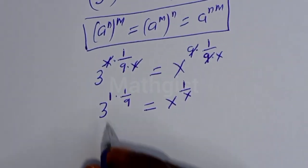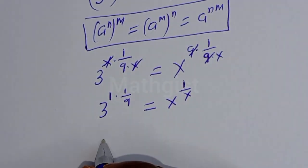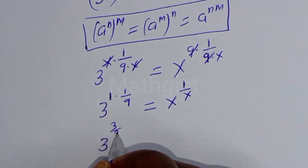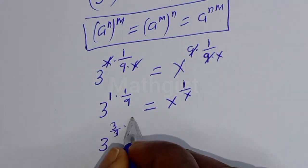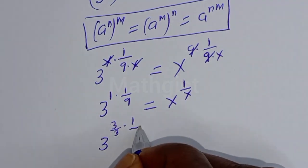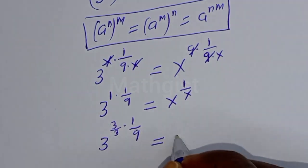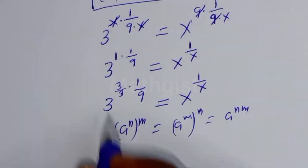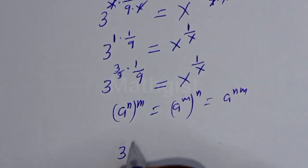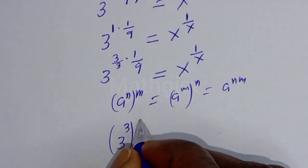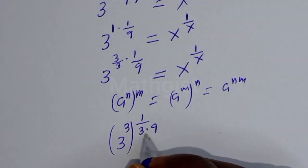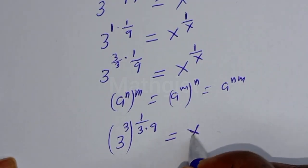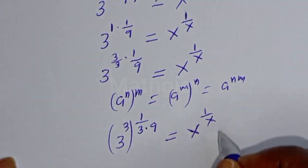Now let's perform a trick here. This can be written as 3 raised to power 1, which is the same thing as 3 over 3. That gives 1 multiplied by 1 over 9 equal to s raised to power 1 over x. This becomes 3 raised to power 3 to the power of 1 over 3 multiplied by 9, equal to s raised to power 1 over x.